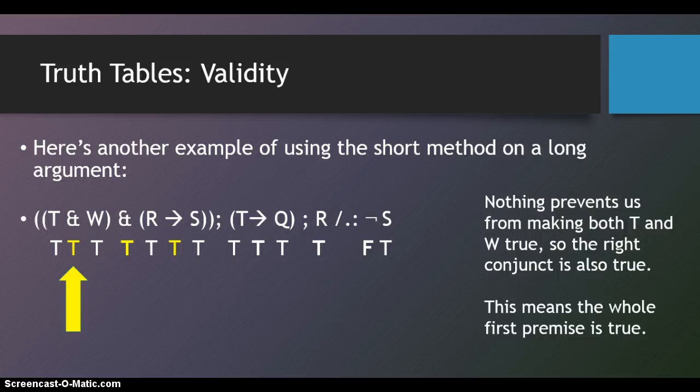And nothing prevents us from making both T and W true. So, the right conjunct is also true. This means that the whole first premise is true. Since we have two conjuncts that are true, the left conjunct and the right conjunct, the conjunction, which is premise one, is also true.